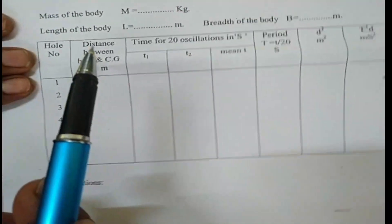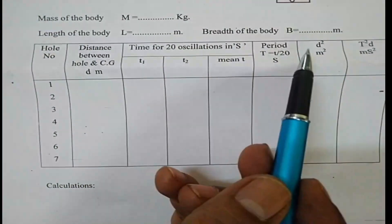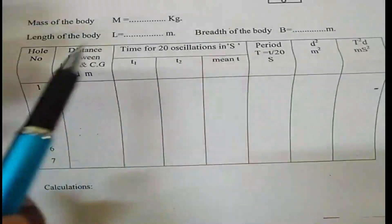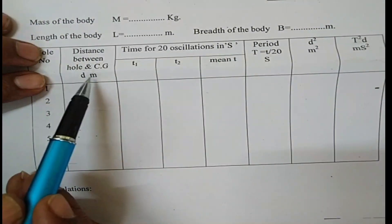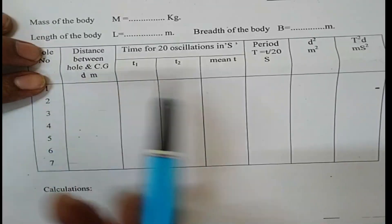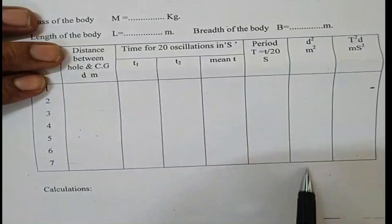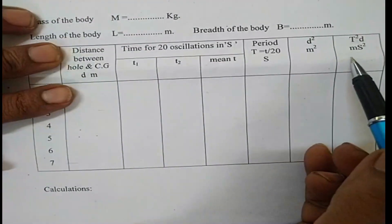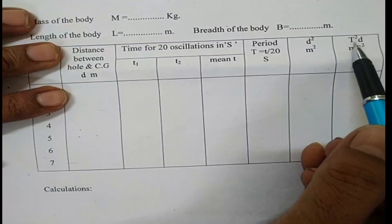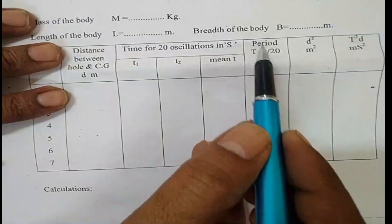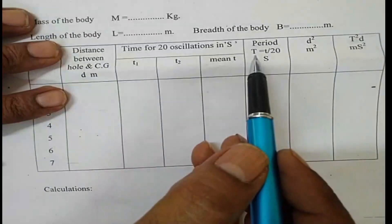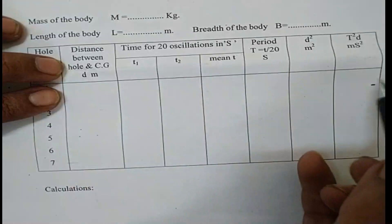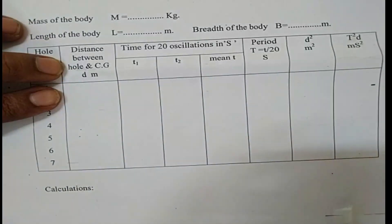Further calculations involve D². We already have the distance D between the hole and center of gravity, so calculate D² in the next column. Next to that, calculate T²D — multiply T² by the value of D — and enter this into the last column.